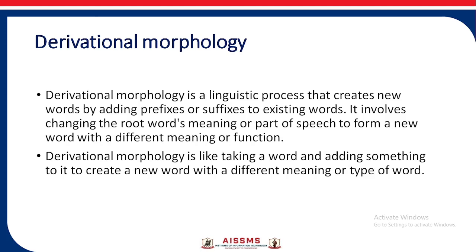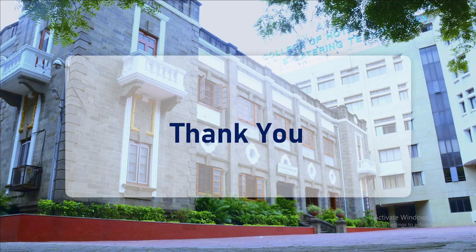Derivational morphology is a linguistic process that creates new words by adding a prefix or suffix to an existing word. It involves changing the root word's meaning or part of speech to form a new word with a different meaning or function. Derivational morphology is like taking a word and adding something to it to create a new word with a different meaning or type. I hope you have understood this concept properly.